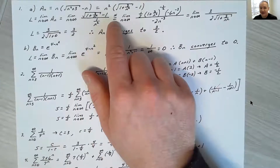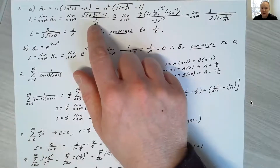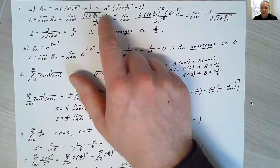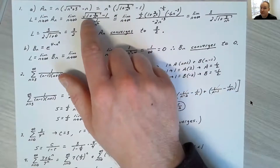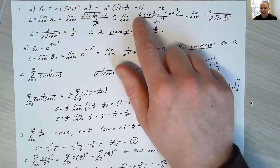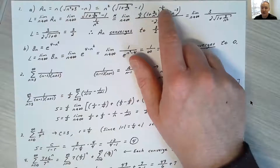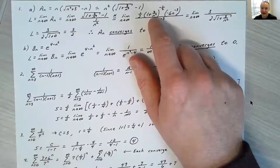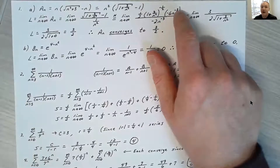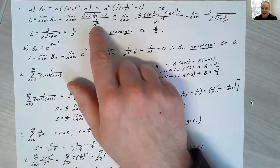L'Hôpital says take the derivative of the numerator and denominator and then try to take the limit, because this fraction is 0 over 0 — indeterminate. Taking the derivative of the numerator: the group is to the one-half power, I bring the one-half down, the group to the negative one-half power, times the derivative of the inside. The derivative of 3n to the negative 2 is negative 6n to the negative 3. The denominator, treating it as n to the negative 2, has derivative negative 2n to the negative 3.